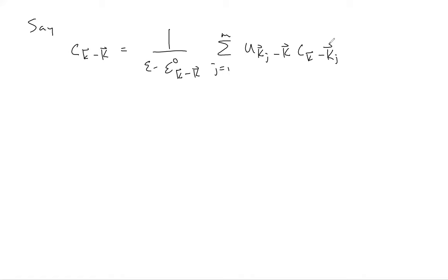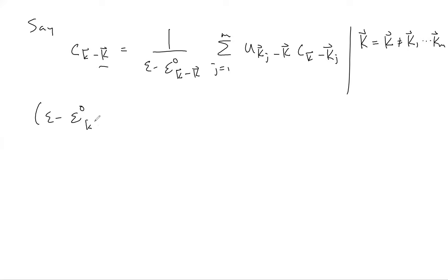We are explicitly considering the case here where big K is not in the degenerate set. We can now substitute this expression for the perturbed coefficients back into our original expression for the perturbed energies, where big K is fixed at one of the Kᵢ that gives the degeneracy.